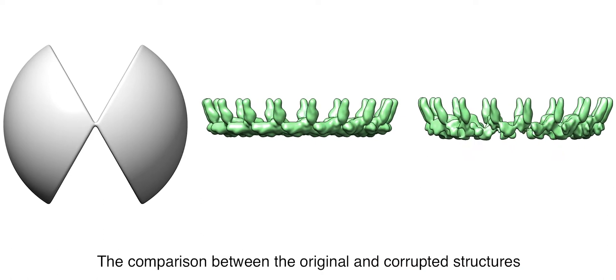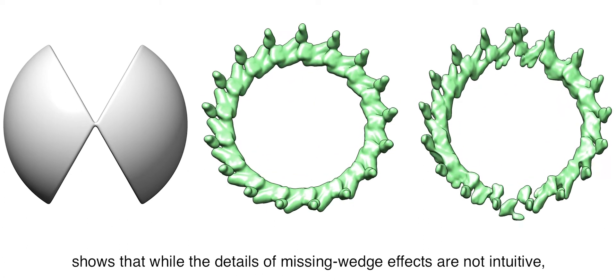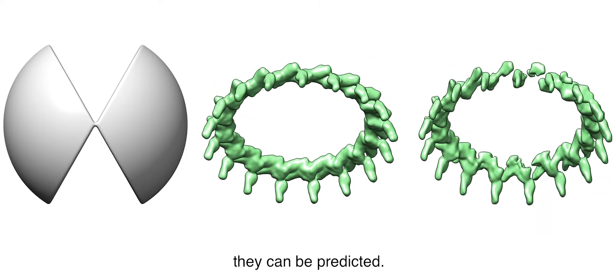The comparison between the original and corrupted structures shows that while the details of missing wedge effects are not intuitive, they can be predicted.